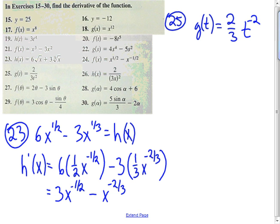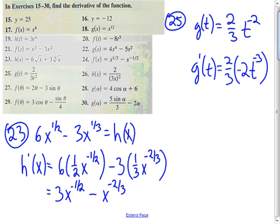And now just applying the power rule, I find that g prime of t would be equal to two-thirds times negative two t... subtract one from the exponent, we get negative three. And then let's just multiply the constants there, and I end up with negative four-thirds t to the negative three.